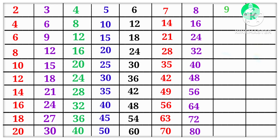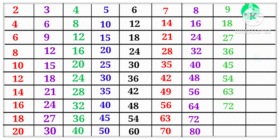9 1s are 9, 9 2s are 18, 9 3s are 27, 9 4s are 36, 9 5s are 45, 9 6s are 54, 9 7s are 63, 9 8s are 72, 9 9s are 81, 9 10s are 90.